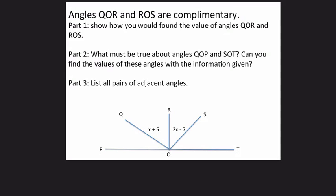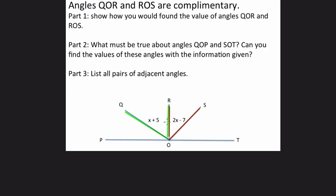Okay, so here we're told that angles QOR, that's this angle right here, and ROS, I'll highlight this in red, are complementary. That means they add to 90 degrees. They're using algebraic expressions here for those angles, and they want us to find them.